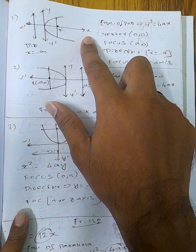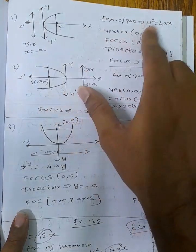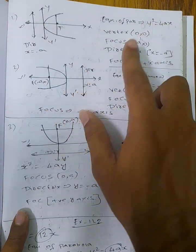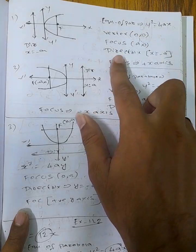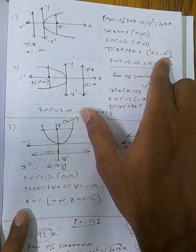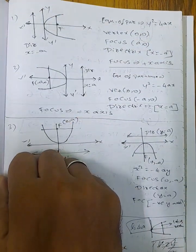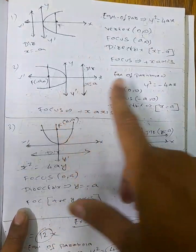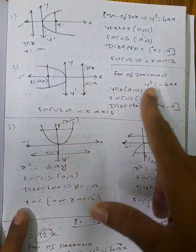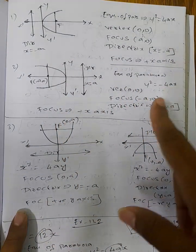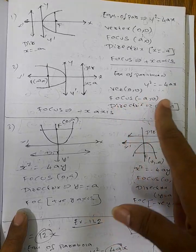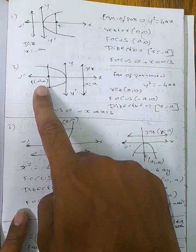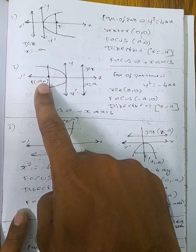First, the right side parabola: equation of parabola y² = 4ax, focus at (a, 0), directrix x = -a. Left side parabola: equation y² = -4ax, focus at (-a, 0).